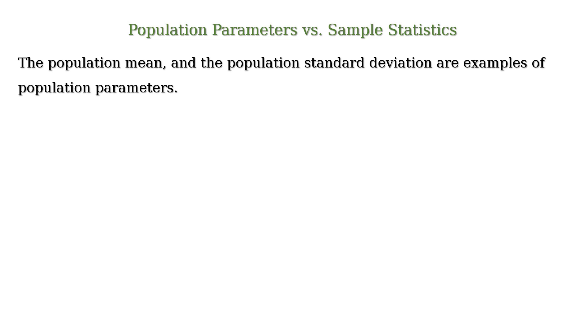So the population mean and the population standard deviation are examples of population parameters. And sample mean and sample standard deviation are examples of sample statistics.